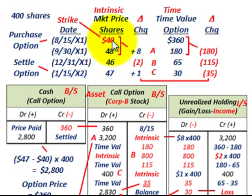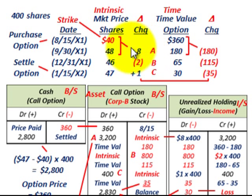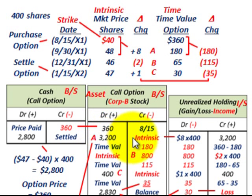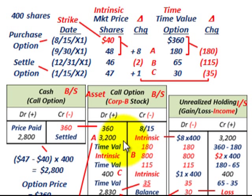Our strike price at 8/15 was $40, and at the next period the market price has gone up to $48. Comparing strike to market price, we have a change of $8 per share. We have an increase in our intrinsic value, so we debit our call option account for $3,200 for the intrinsic portion — that's the $8 increase per share times 400 shares. We recognize an unrealized holding gain of $3,200.